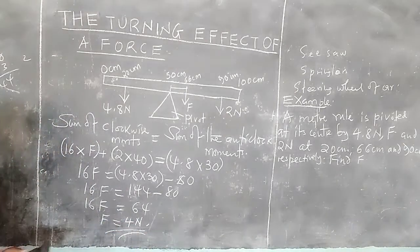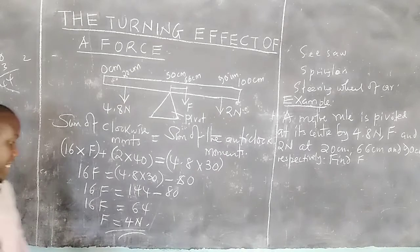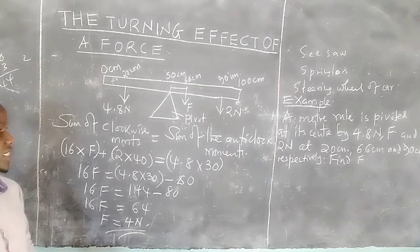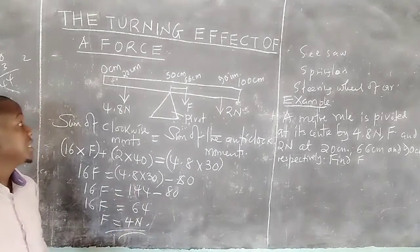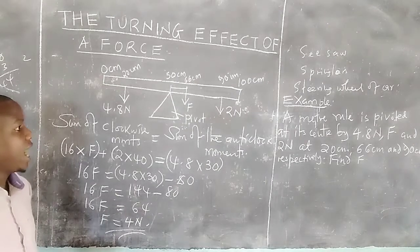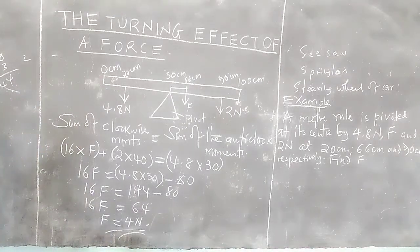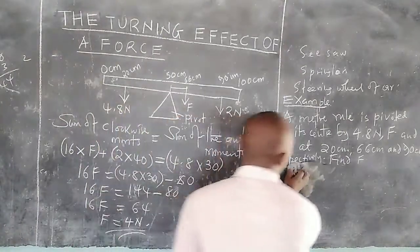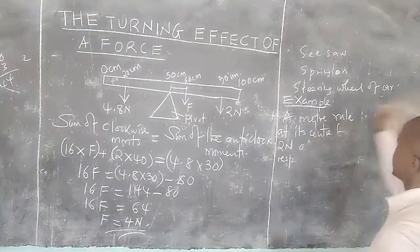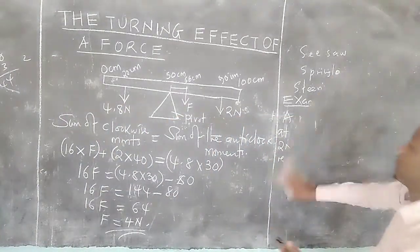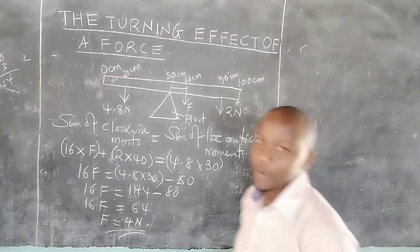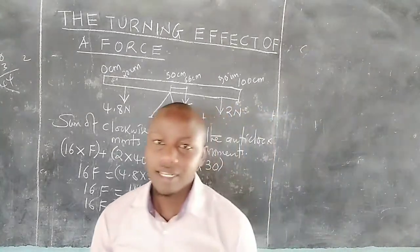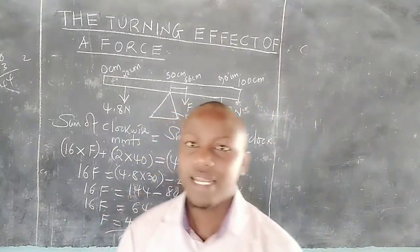So the unknown force F is 4 newtons. That is how we apply the law of moments, also called the principle of moments. Thank you for following — please subscribe to the channel and share the link.